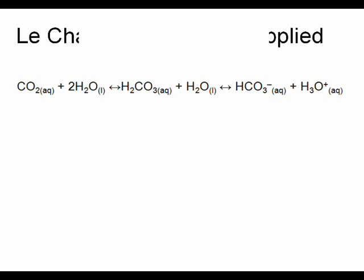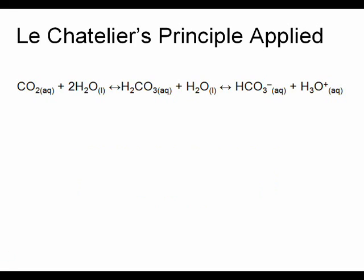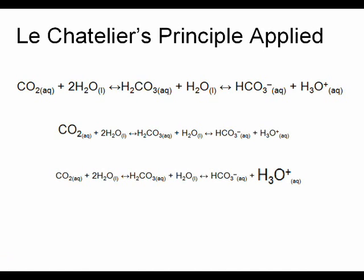How can we apply Le Chatelier's principle to blood? Le Chatelier's principle states that a dynamic equilibrium tends to respond so as to relieve the effects of any change in the conditions that affect the equilibrium. When an imbalance occurs, we can use Le Chatelier's principle to predict the response the body will have. In the example, there is an increase in carbon dioxide, which will lead to an increase in carbonic acid, which will then lead to an increase in bicarbonate ions and hydrogen ions, re-establishing equilibrium. The same goes for the second example, but in the opposite direction.